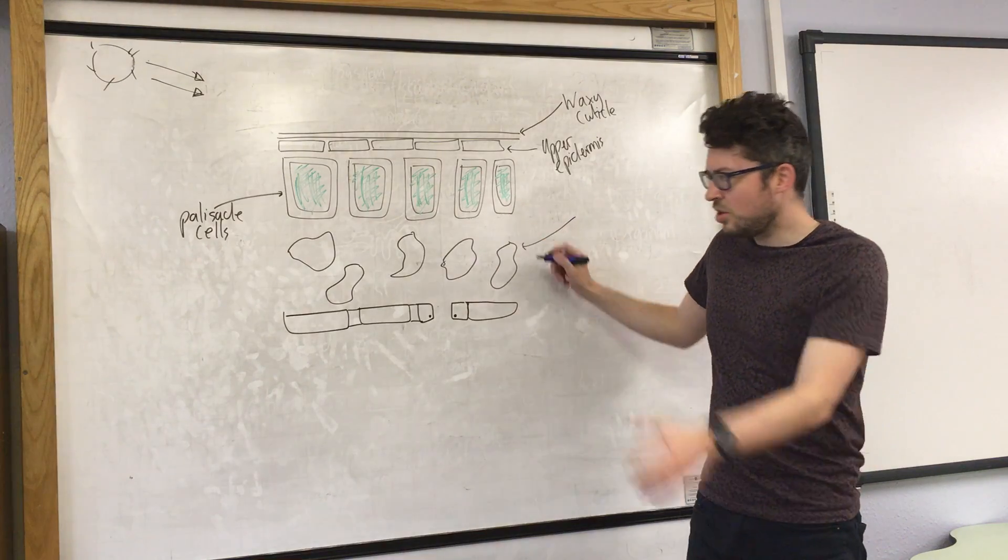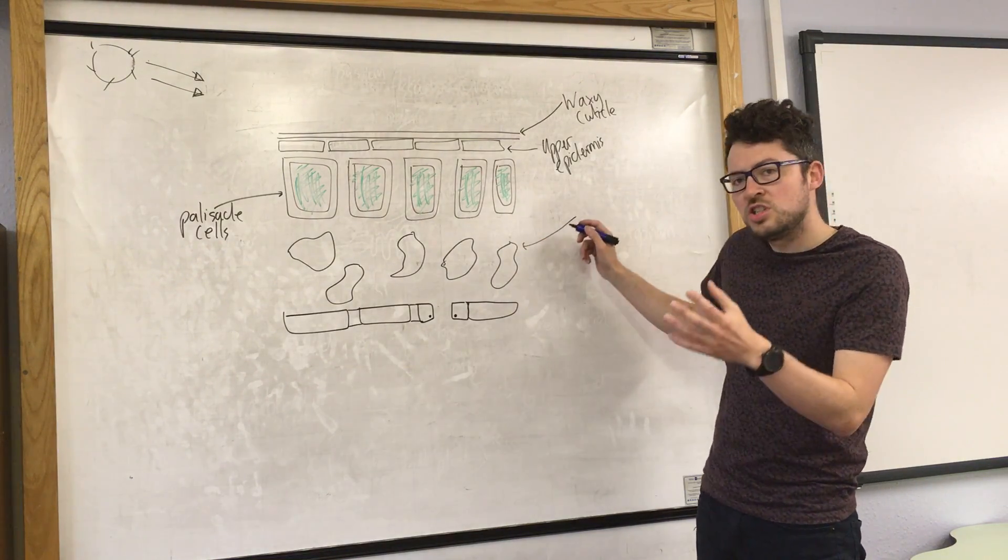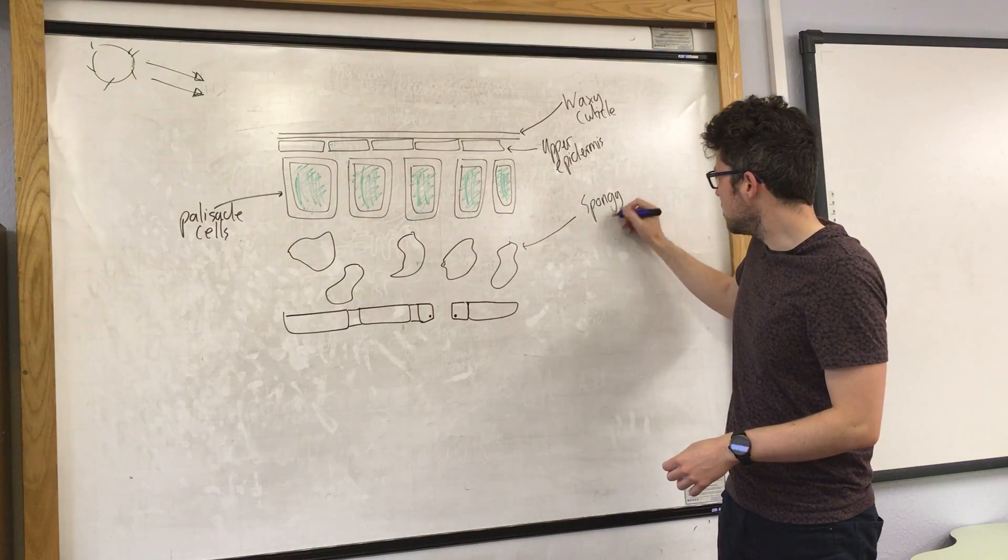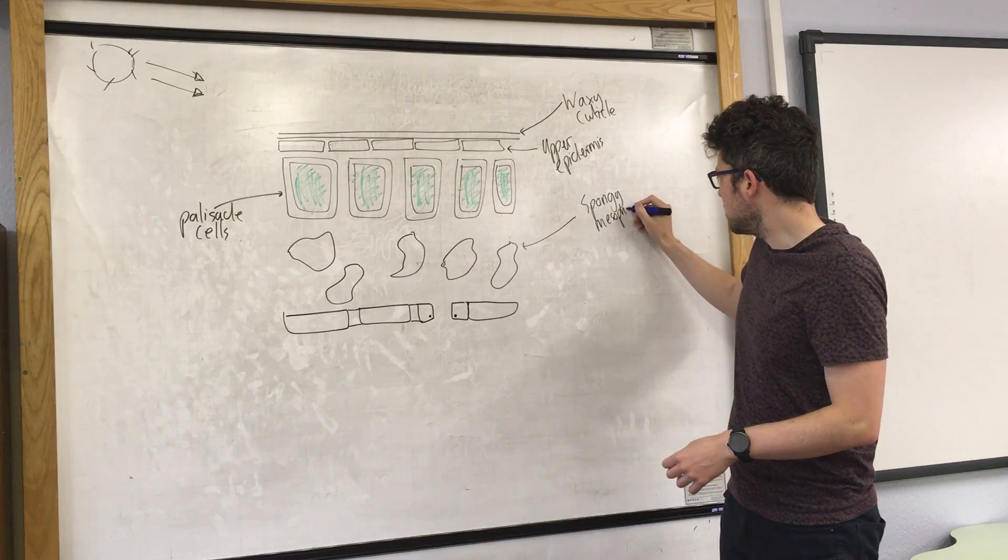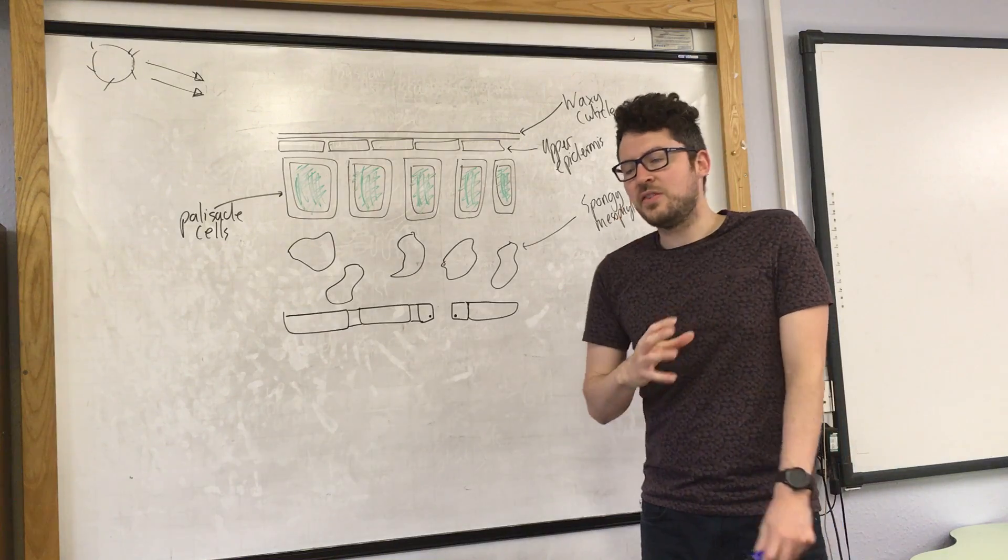Next layer, you can see there are many air spaces like a sponge. This is known as the spongy mesophyll layer.